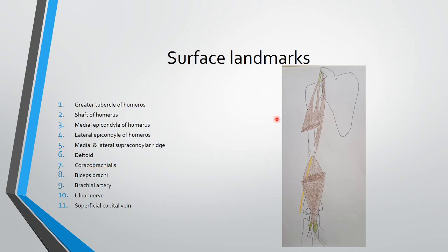Coracobrachialis is situated medially. The bicep brachii is the most prominent structure in the front of the arm. At the elbow, medial to the tendon of bicep brachii, you can feel pulsations — that is the brachial artery, most commonly used for taking blood pressure. Behind the medial epicondyle, you can roll your finger over a cord-like structure; sometimes when we strike the table edge we feel a tremor — that is due to the ulnar nerve.